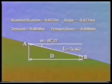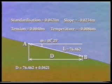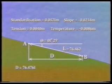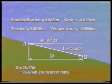These are then used in the combined formula to give D equals L plus the standardization correction, minus the slope correction, plus the tension correction, minus the temperature correction, which comes to 76.4761 meters, and this is rounded to the nearest millimeter, to give the horizontal distance of AB as 76.476 meters.